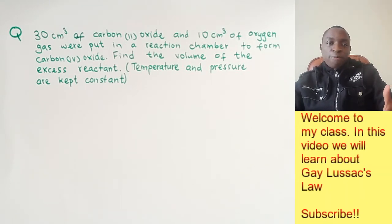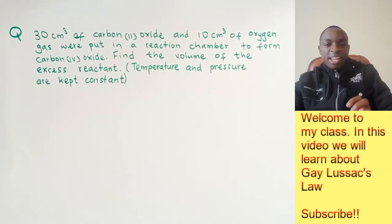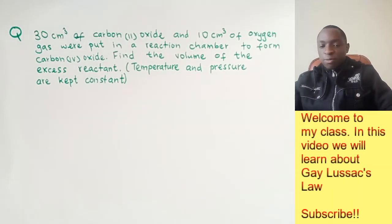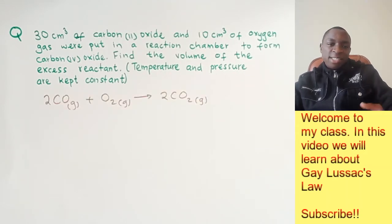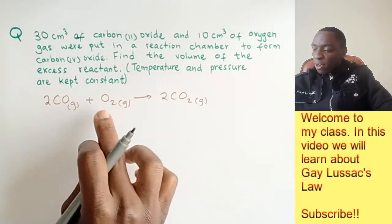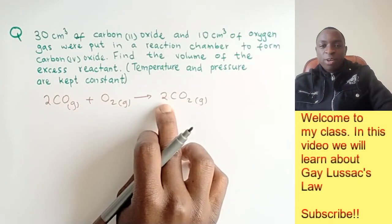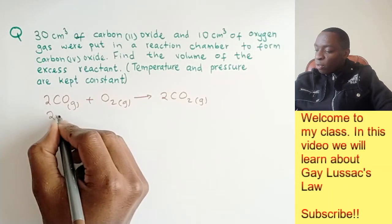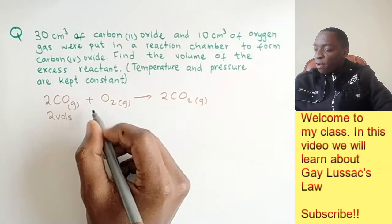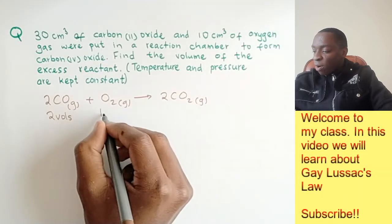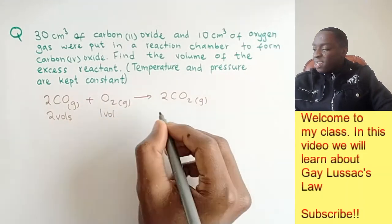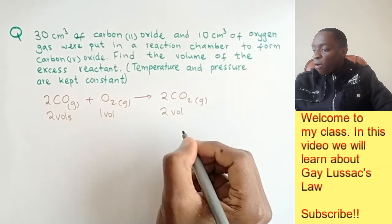Once again, we're going to start from the equation. The values used to balance the equation — those coefficients — are the ones that provide us with the volume ratios. First step is to write the equation. Then we get our volume ratios. The coefficients used to balance the equation give us the volume ratios, meaning two volumes of carbon-2 oxide react with one volume of oxygen gas to give two volumes of carbon-4 oxide.